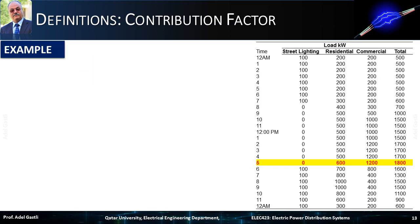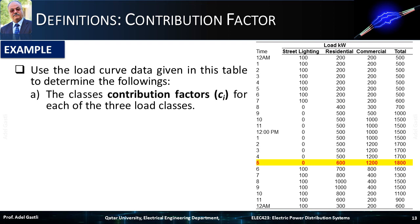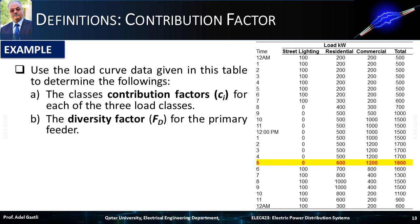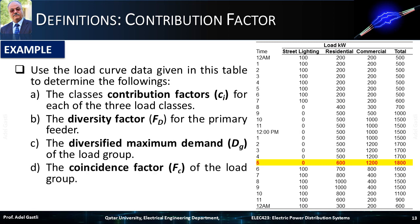Let's consider another example that will explain how these factors are calculated from load characteristics. In this example, we need to use the load curve data given in this table to determine the class contribution factors for each of the three load classes, the diversity factor for the primary feeder, and the coincidence factor of the load group, noting that the peak occurs at 5 p.m.